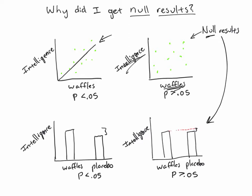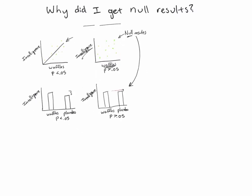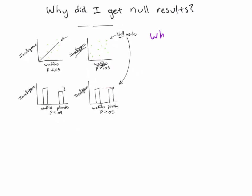But then the question is, why did I get these null results? Let me get a little more space here and move this up and out of the way. And let's talk about this idea. Why did my experiment or my correlational design not happen the way that I was hoping it would? What is going on here? And there are a number of different possibilities.